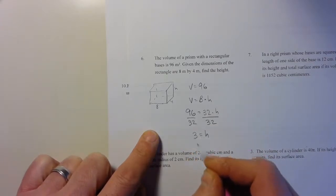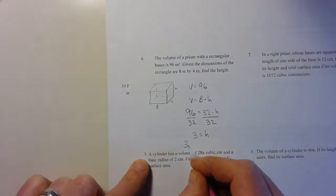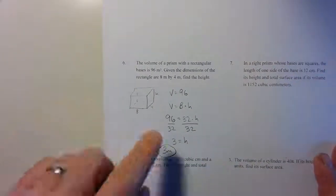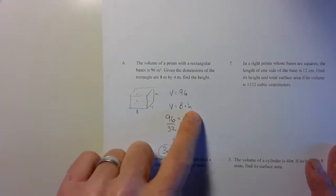So my height is 3 meters. If you're working backwards, you just think about your formula. Instead of plugging all these numbers in, you plug in on the other side.